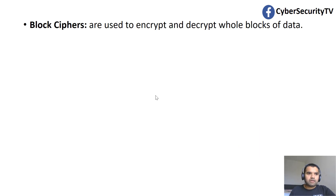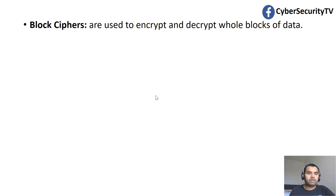Block cipher is used to encrypt and decrypt whole blocks of data. For example, if you have 64 bits of data, every 64-bit chunk becomes a block, you encrypt it and send it over. Now imagine if you have 65 bits of data — that's not easy for block ciphers, because you have one full 64-bit block but the remaining bits require padding. You have to encrypt and decrypt that padded block too, which takes extra time and resources. That's why block cipher is mostly recommended for fixed-length data.